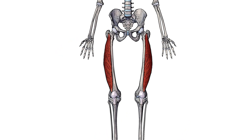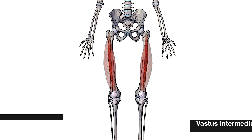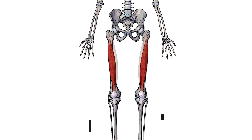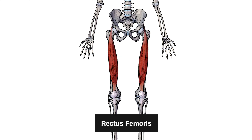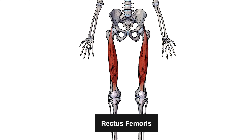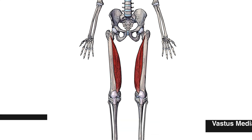Here we can see pictured the vastus lateralis. The vastus lateralis is the largest of the four quadricep muscles. The other three quadricep muscles are the vastus intermedius, the rectus femoris and the vastus medialis.